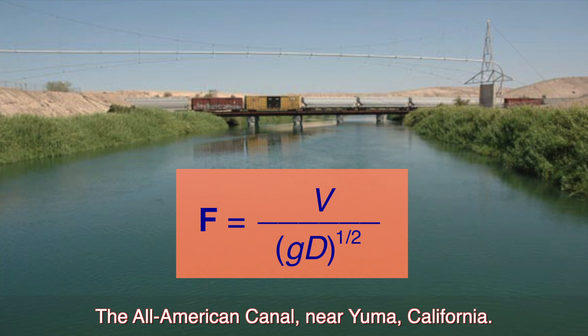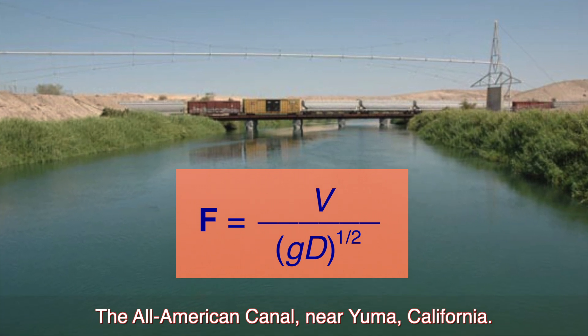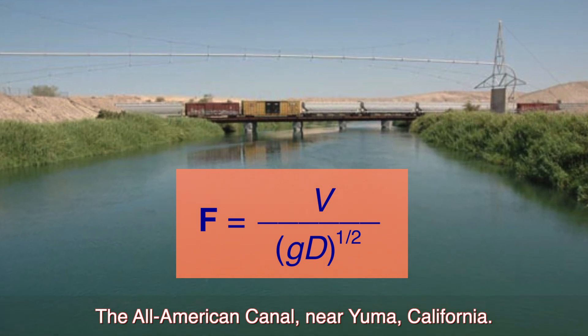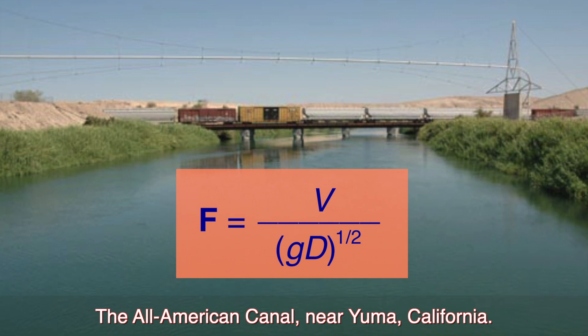This concept states that the mean velocity, V, of the flow is proportional to the relative acceleration of dynamic waves.